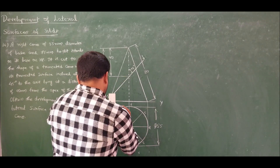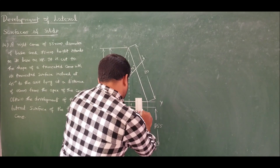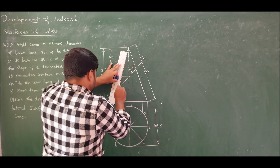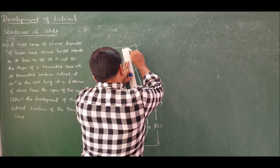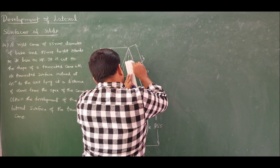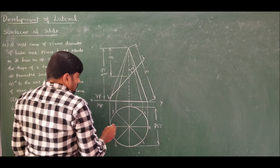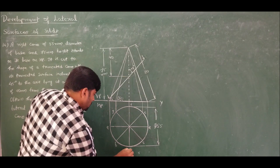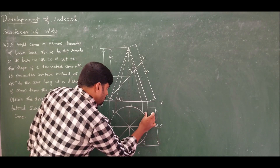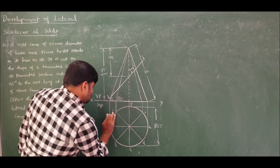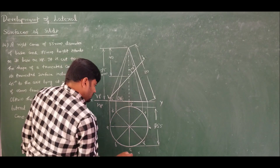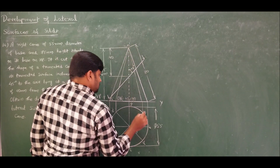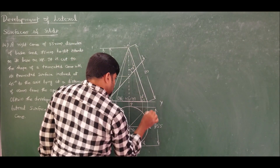Take the projection from the top view up to the front view and connect all points to the apex using very thin lines, since these are imaginary reference lines. Remember, there are no slant edges in a cone — there is only the slant generator. In the front view, label the projected points as A', B', G', C', H', O, O', D', F', and E'.